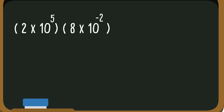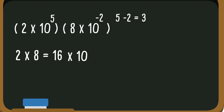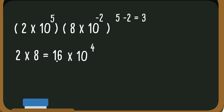With this problem, we have 2 times 10 to the 5th times 8 times 10 to the negative 2. So let's multiply the coefficients: 2 times 8 is 16. We keep the 10 and add the exponents — a positive 5 and a negative 2 is 3. So we have 16 times 10 to the 3rd. But we are not in correct scientific notation, so we need to make the number smaller by moving the decimal one place to the left. When you move to the left, the exponent gets larger, so we add 1 to the exponent 3. It becomes 1.6 times 10 to the 4th.